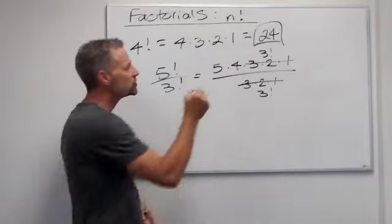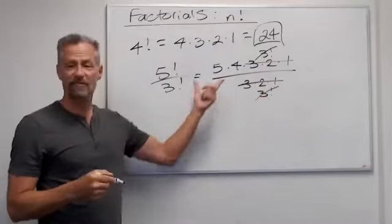If the bottom is 3 factorial, those are just going to cancel out. So this is just going to be 5 times 4, just 20.